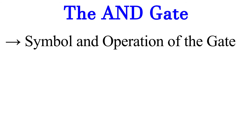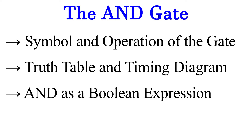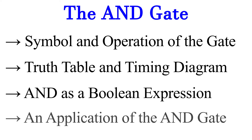The next logic gate we will be discussing is the AND gate. First, we'll look at its symbol and operation. Next, we'll look at its truth table and timing diagram. Then, we'll look at its Boolean algebra use, and finally, an application.